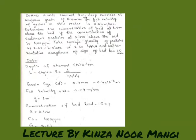A wide channel 4 meter deep consists of uniform grains of 0.4 millimeter. The fall velocity of the grains in still water is 0.04 meter per second. Determine the concentration of the load at 1 meter above the bed if the concentration of the sediment particle at 0.4 meter above the bed is 400 parts per million. Take specific gravity of particle as 2.67, slope is 1 in 4444, and the representative roughness of the bed is Ks equals 2.0 millimeter with Karman's constant.